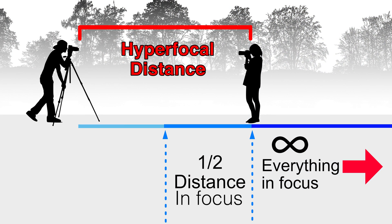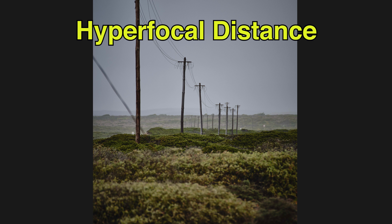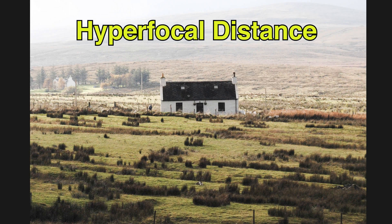Think of the hyperfocal distance as the minimum — the shortest distance between you and your subject — when everything behind your subject, and everything from the halfway point to your subject, is in focus. It's kind of confusing because of that half-distance rule, but you can also safely assume that if you focus beyond the hyperfocal distance, that rule still applies: everything behind it would still be acceptably in focus, and everything from the halfway point to your subject would also be in focus, even if you focus further away.